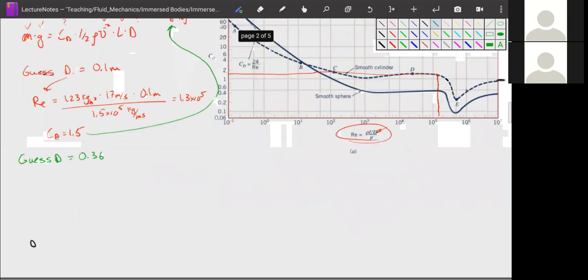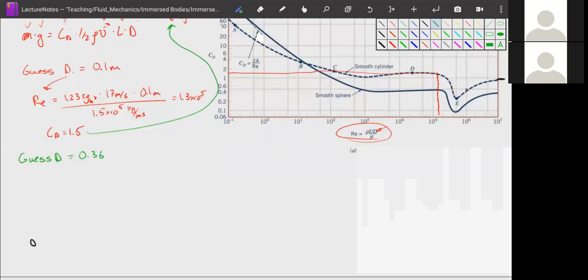So let's do round two. Round two, we've calculated a new Reynolds number. And our Reynolds number equals, when we plug everything in, nothing changes except for our diameter. But our new Reynolds number is 6.37 times 10 to the fifth.